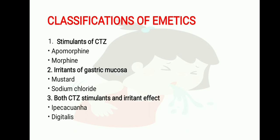Classification of emetics: there are three main categories. First are stimulants of the CTZ — drugs include apomorphine and morphine. Second are irritants of the gastric mucosa — drugs include mustard seeds and sodium chloride. Third have both CTZ stimulant and irritant effects — drugs include ipecacuanha and digitalis.